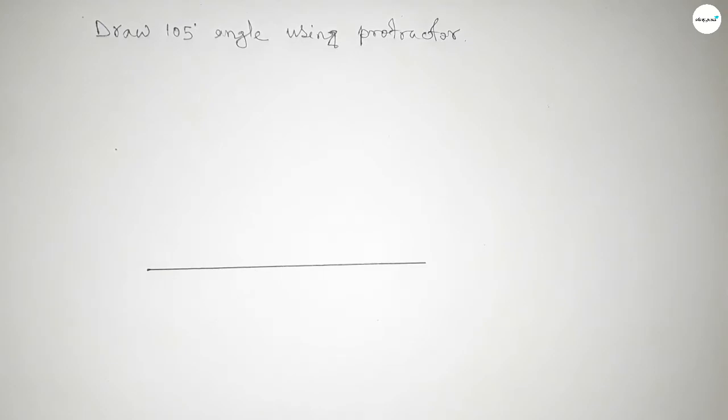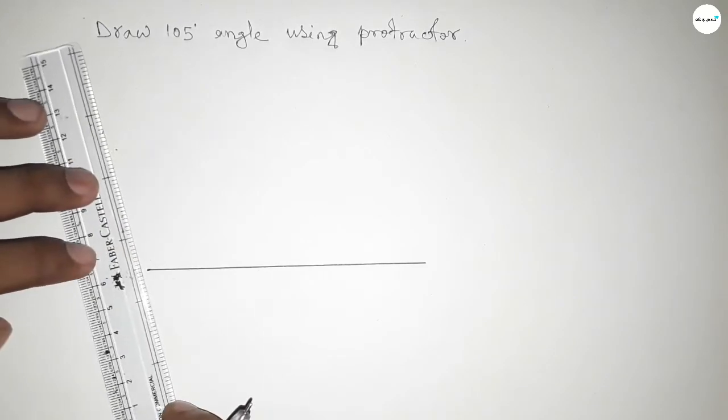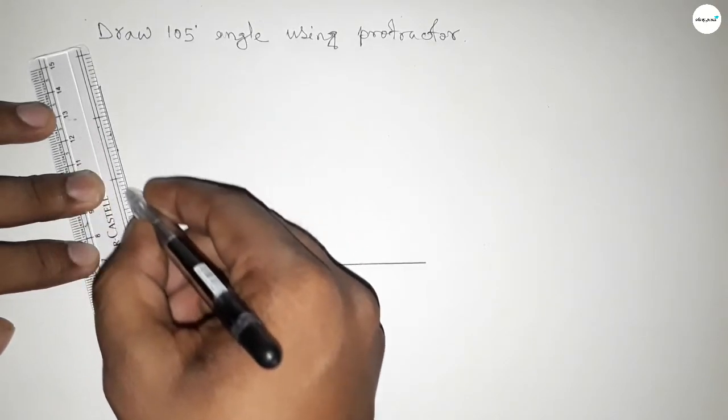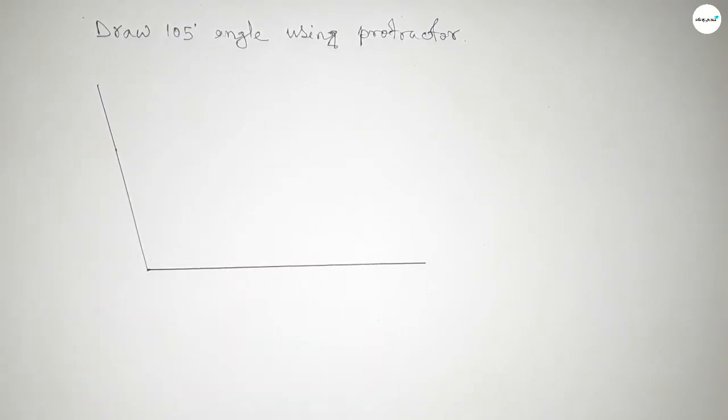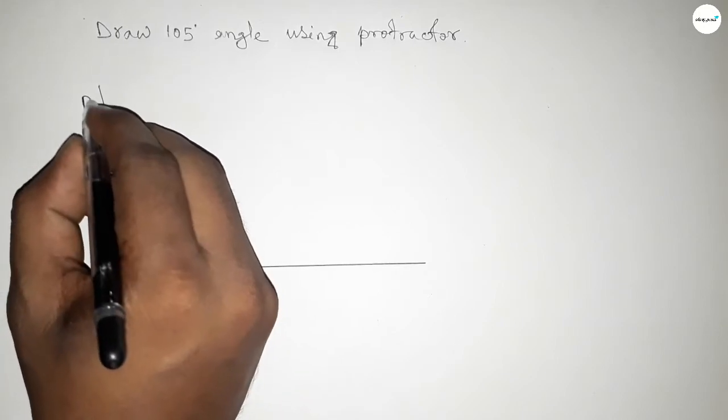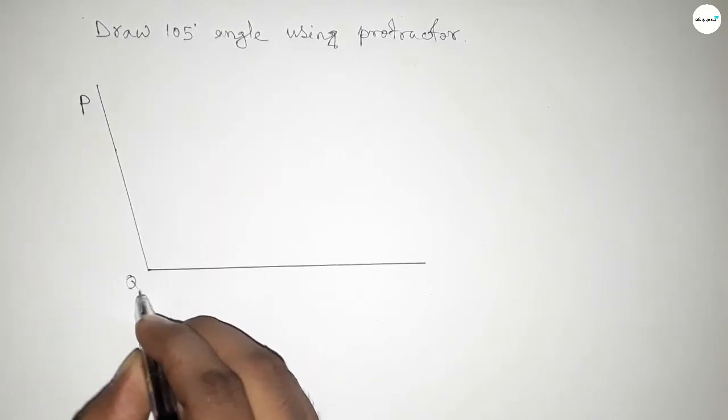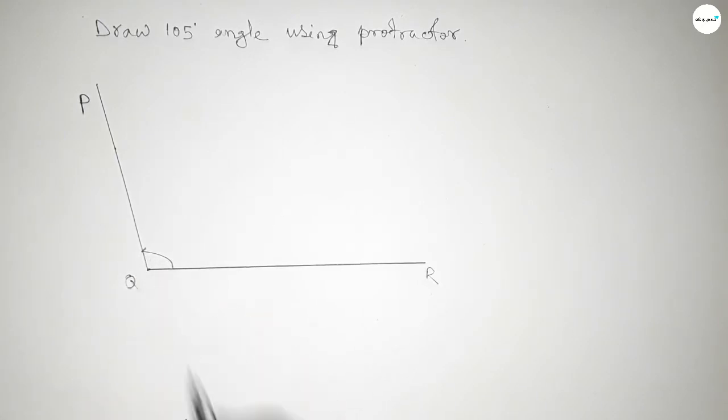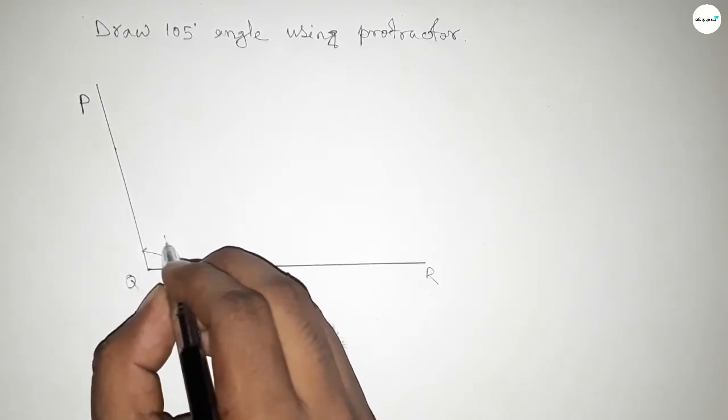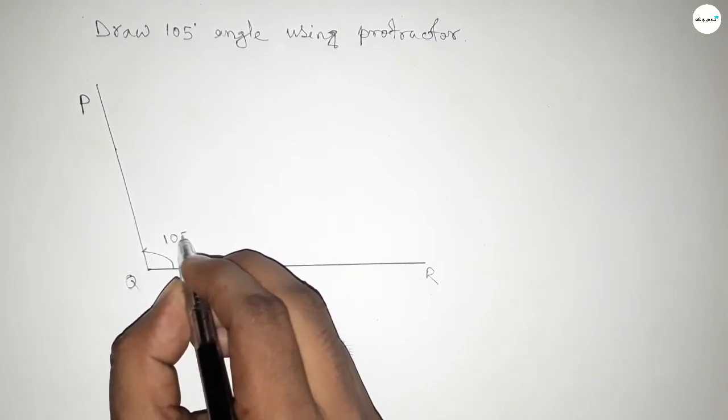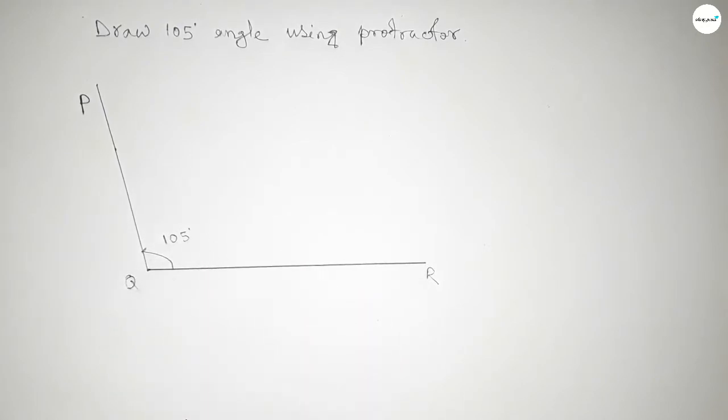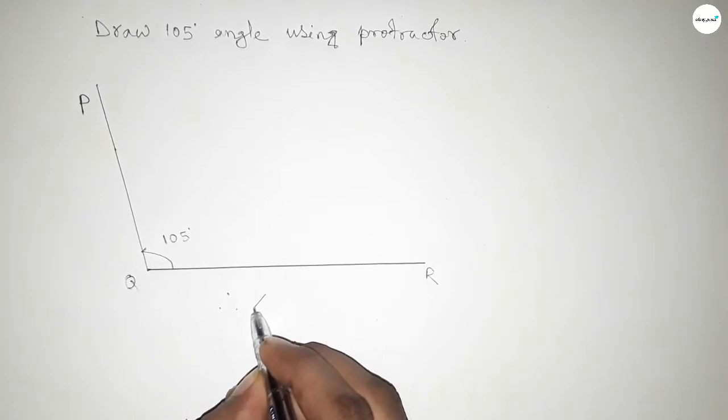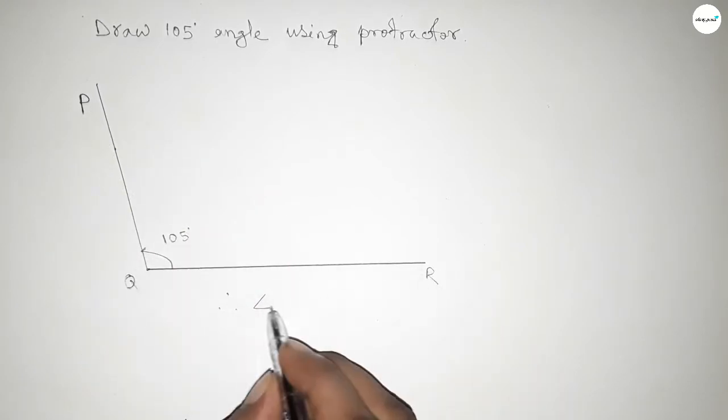Now joining this side to get 105 degree angle. So we got 105 degree angle by joining this. So this is PQ and R, so angle PQR is 105 degrees. Therefore angle PQR equals 105 degrees.